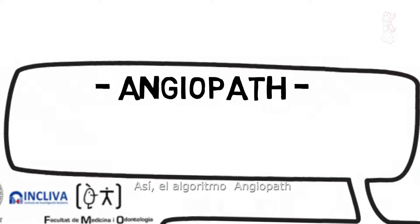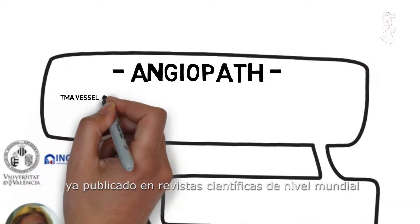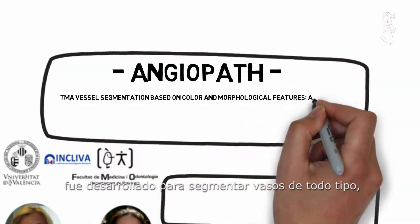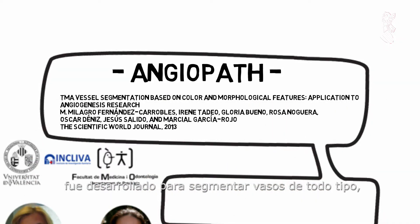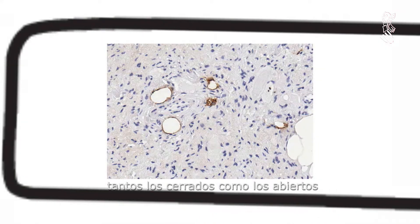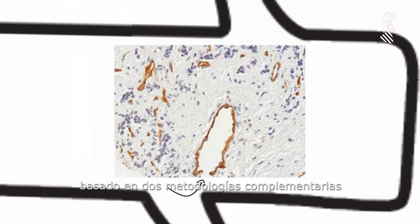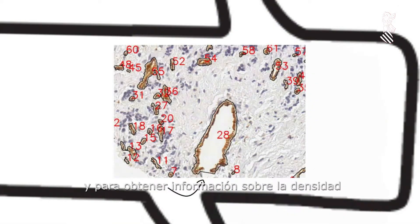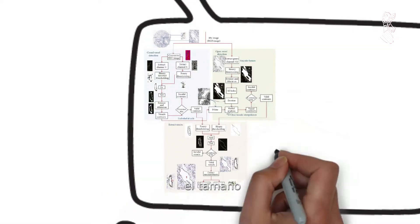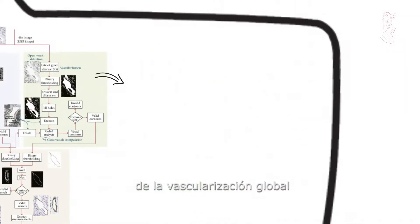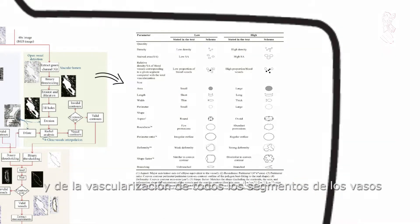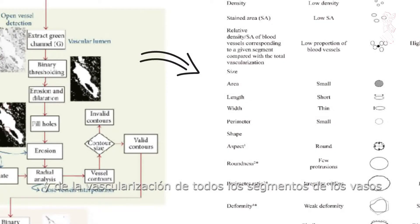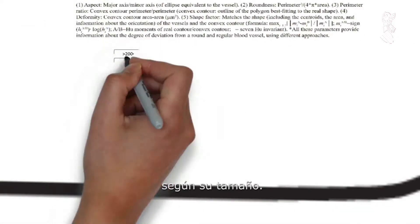To this end, the segmentation algorithm angiopath, already published in the Scientific World Journal, has been developed to segment closed and open vessels with incomplete endothelial layer staining, based on two complementary methodologies, and to obtain information about the density, size and shape of total vascularization, and of the vascularization of all vessel segments according to their size.